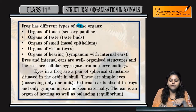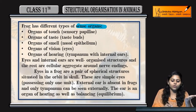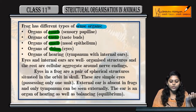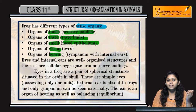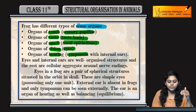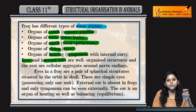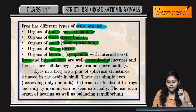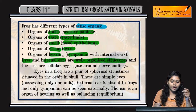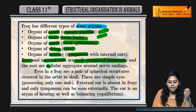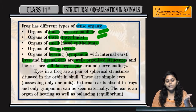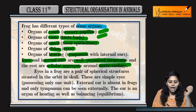Frog के पास different types of sense organs होते हैं — organ of touch, taste, smell, vision and hearing. Touch के लिए होता है sensory papillae, taste के लिए होते हैं taste buds, smell के लिए nasal epithelium, vision के लिए eyes, and hearing के लिए tympanum with internal ears. Eyes और internal ears well organized structures हैं, बाकी touch, taste, smell के लिए they are cell aggregates around the nerve endings — ये well developed नहीं हैं.